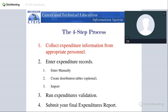Once logged in, there's a four-step process for expenditure reporting. Step one: collect all expenditure information from appropriate personnel — this happens outside of CETIS, from your business system or business managers. Step two: enter expenditure records into CETIS, either manually one at a time, using distribution tables for expenditures applying to more than one program, or by importing your expenditures. Step three: run your expenditures validation to double-check everything is correct. Step four: submit your final expenditure report.